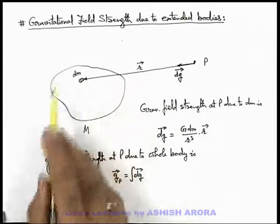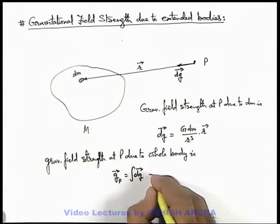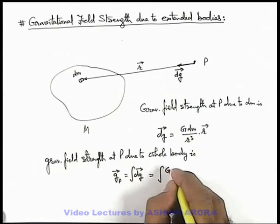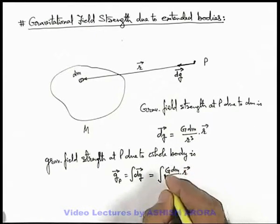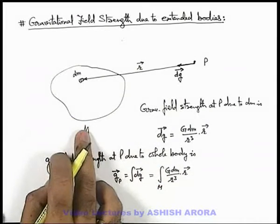As we are taking a general case we only integrate the expression which is G dm by r cube multiplied by r vector, which is for the integration of the whole body M.